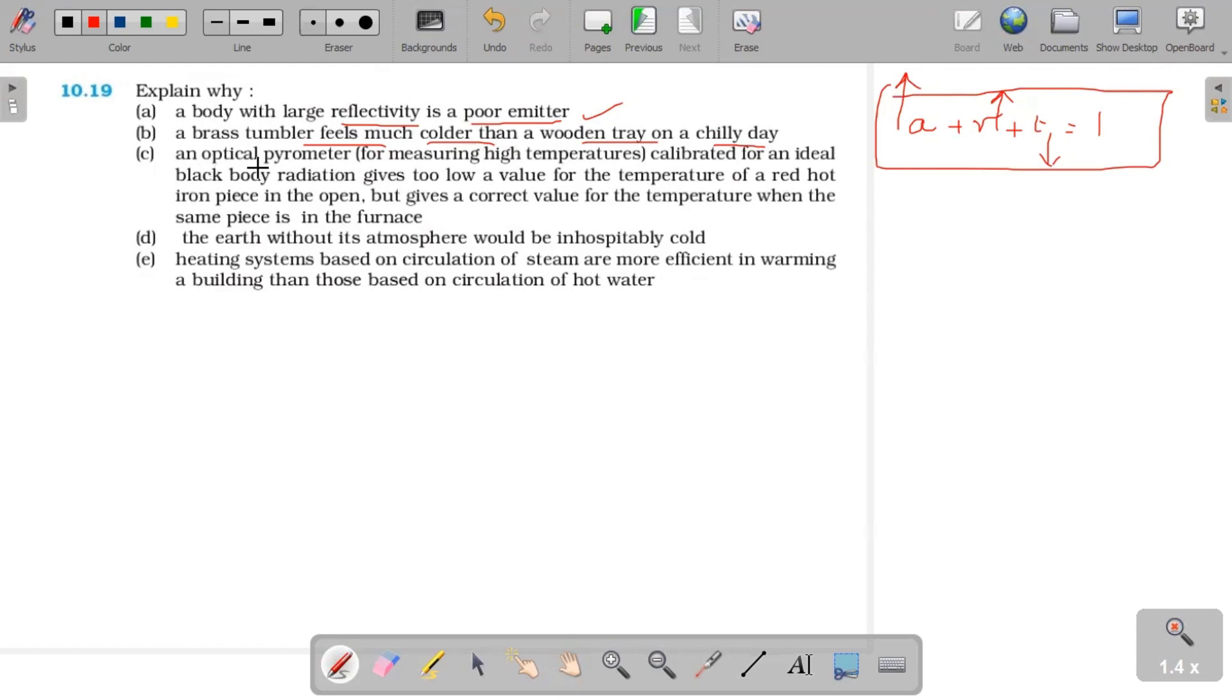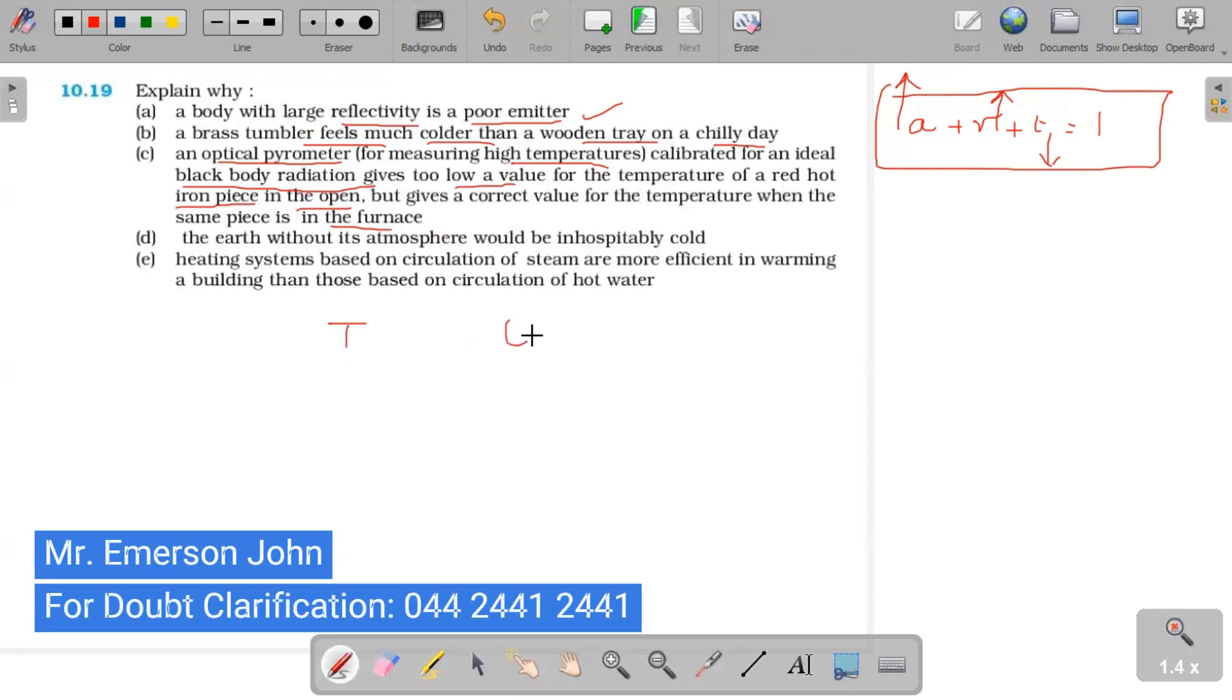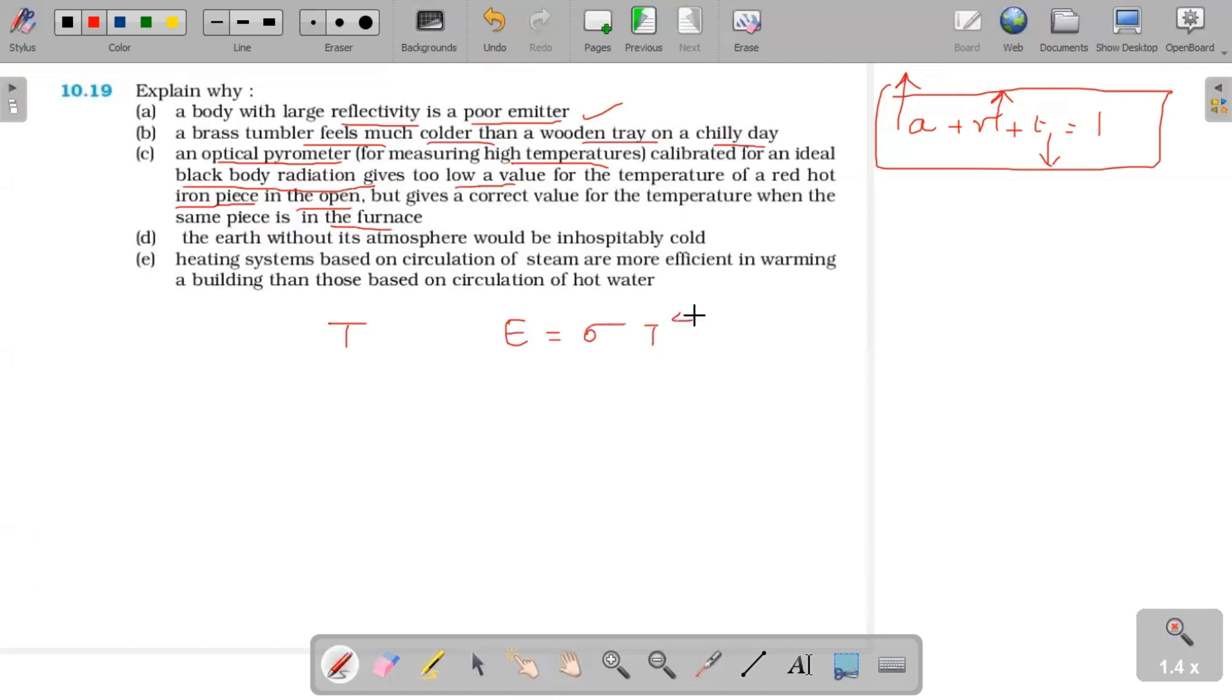Question C. An optical pyrometer for measuring high temperature calibrated for an ideal black body radiation. It gives too low a value for the temperature of the red hot iron piece in the open, but it gives correct value for the temperature with the same piece in the furnace.